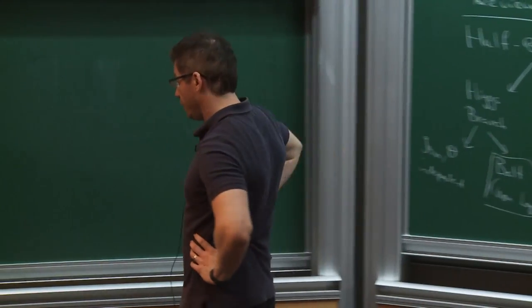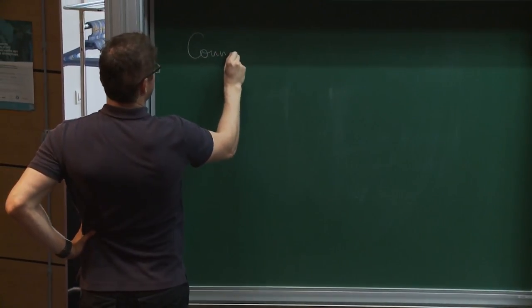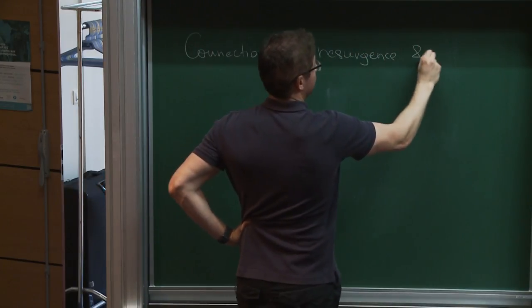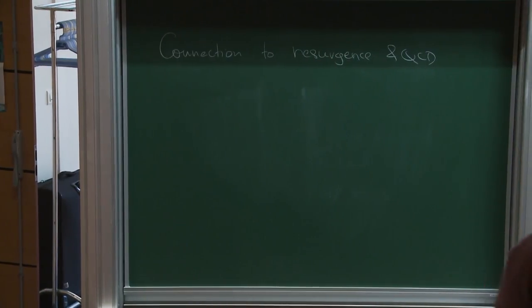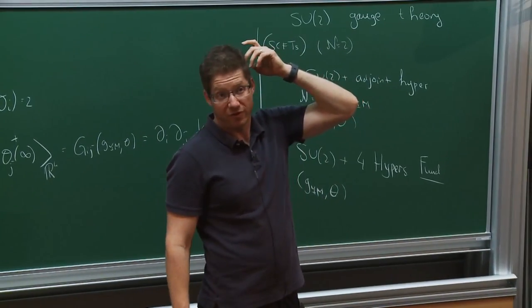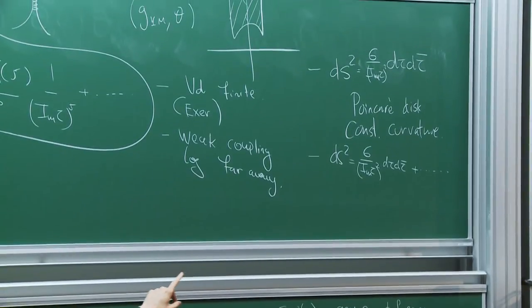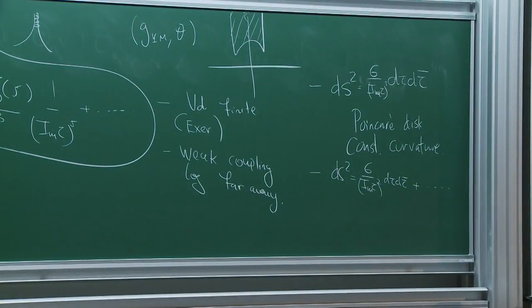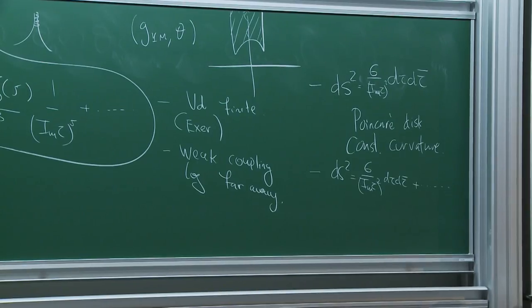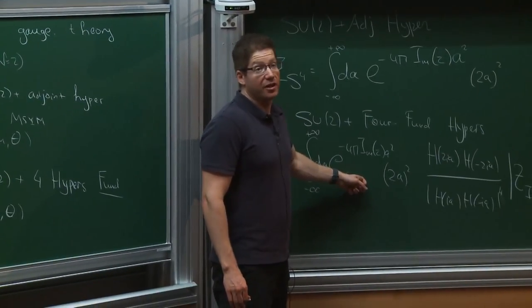Now I'm moving to connections with resurgence theory and QCD. It is typically expected that the expansion in theories with a small coupling constant has a perturbative series, and on top of that, instanton corrections each accompanied by their own perturbative series. So for any observable Q, you expect some expansion in λ, then instanton contributions each with their own expansion in λ, and so on. This coincides with the structure we find here. I'll now tell you about some old conjectures about resurgence from the 70s and 80s that we can test here.